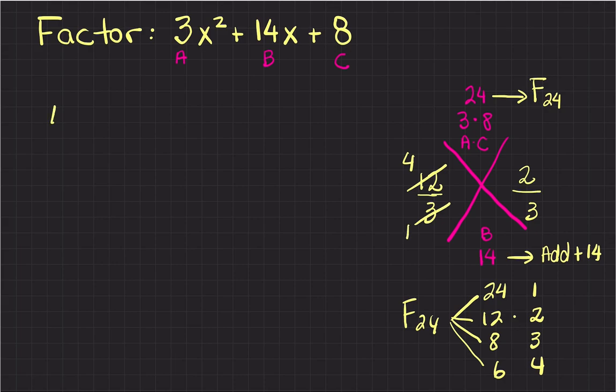With these two fractions I'm going to write my factorization. With 4 over 1 I'm going to write the parenthesis on the left side, and with 2 over 3 I'm going to write the parenthesis to the right side.